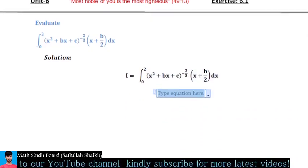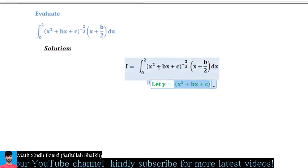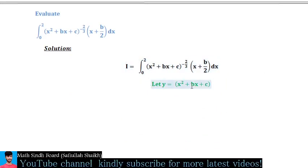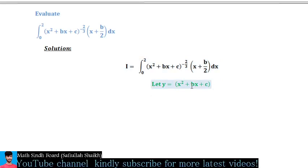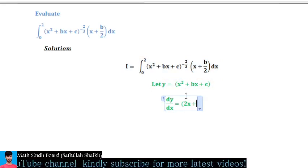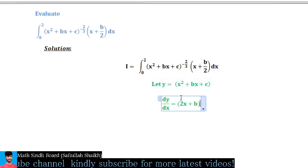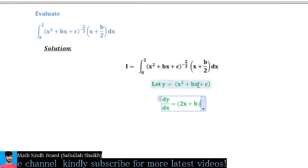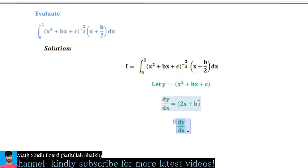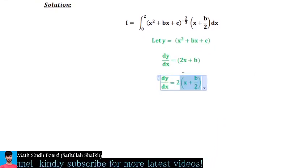The first step is to suppose y = x² + bx + c. If y equals x² + bx + c, then dy/dx equals 2x + b, because the derivative of x² is 2x, the derivative of x is 1, and b·1 equals b.